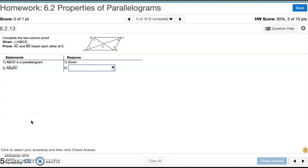Number 5. Complete the two-column proof. We're given that ABCD is a parallelogram. That's what that symbol means. And we're trying to prove that AC and BD, the diagonals, bisect each other at E. Bisect means cuts each other in half.